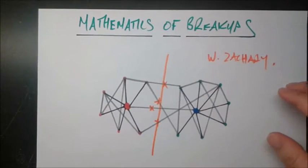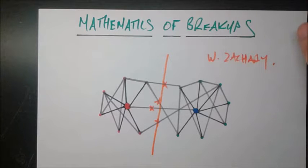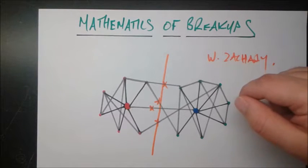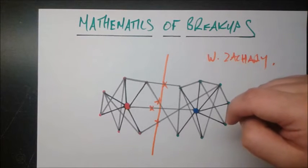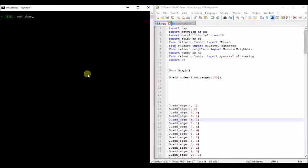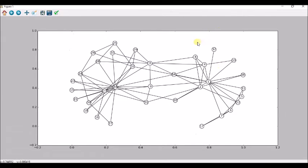Now to do our analysis, this was just kind of a toy example that I drew. We're going to be looking at a real-world example by a researcher by the name of Wayne Zachary. He did studies around 1970 in a university on a karate club. Let's take a look now at Zachary's karate network.